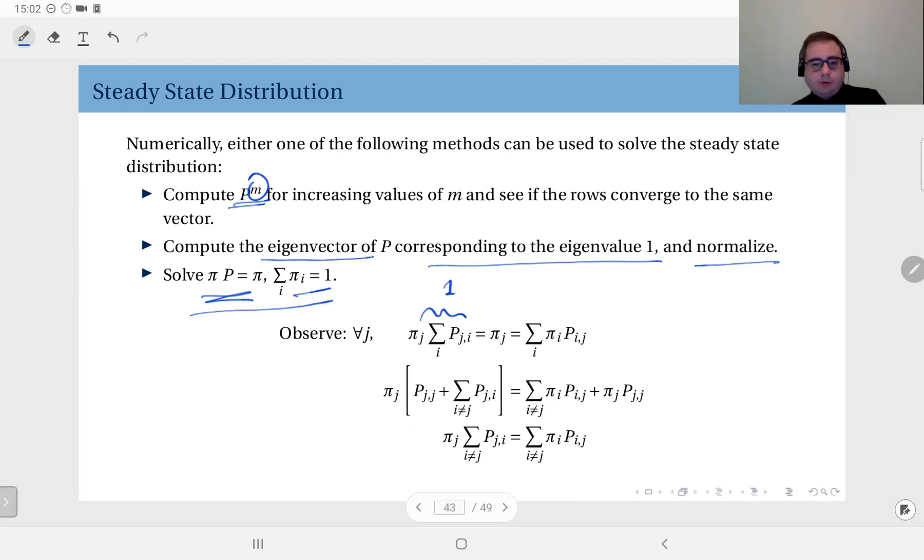Because this is the sum of any row of this state transition matrix, so this is just a trick to write πⱼ. But πⱼ also equals, over all i's, πᵢ times pᵢⱼ.